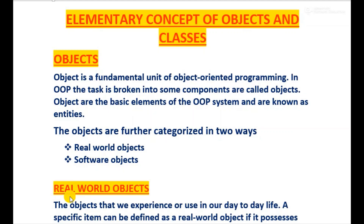The first elementary concept is object. So what is an object? An object is a fundamental unit of object oriented programming. In OOP, the task is broken into some components which are known as objects. Objects are the basic elements of the object oriented programming system and are also known as entities. In Java, programs are constructed using objects. Objects can be further categorized into two ways: real world objects and software objects.